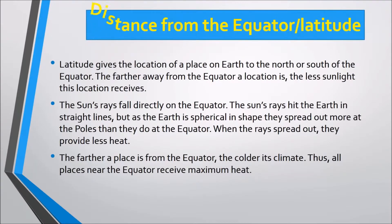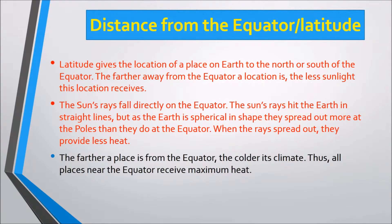First, distance from the equator or latitude. Latitude gives the location of a place on Earth to the north or south of the equator. The further away from the equator a location is, the less sunlight it receives. The sun's rays fall directly on the equator, but because the Earth is spherical, they spread out more at the poles. When the rays spread out, they provide less heat. The further a place is from the equator, the colder its climate. Thus, all places near the equator receive maximum heat.